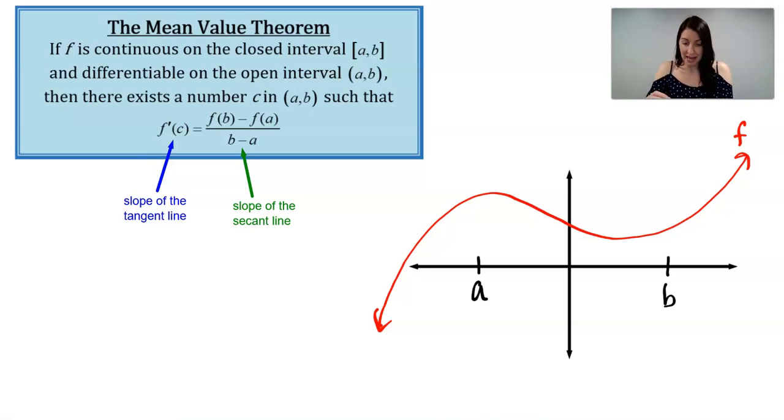So again, on the graph, that will mean that if I draw in the secant line, which is the line connecting these two points here, and if I find the slope between those two points, that would give me the slope of the secant line.